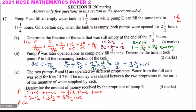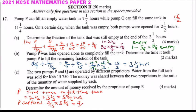P supplied water for the full 5 and 5 over 6 hours total, running at a rate of 2 over 15 per hour. Multiplying 2 over 15 by 5 and 5 over 6 gives the total amount supplied by P, which equals 7 over 9. So Pump P supplied 7 over 9 of the tank.